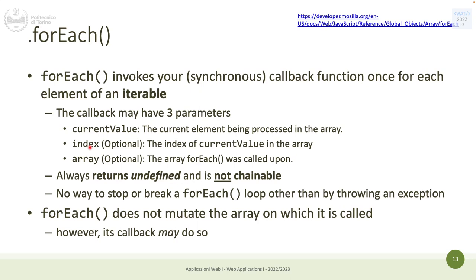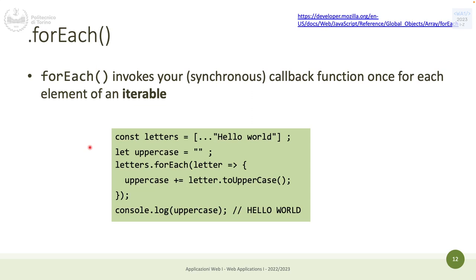forEach does not mutate the array, like any functional method, but the callback might mutate the array — it shouldn't, but it's not prohibited. In the previous example we stored results outside the function, but if you want, you can mutate the array within forEach by passing it as the third parameter and mutating it directly.